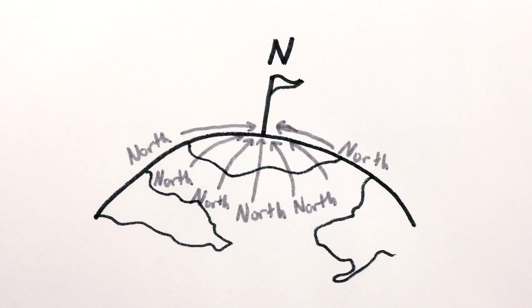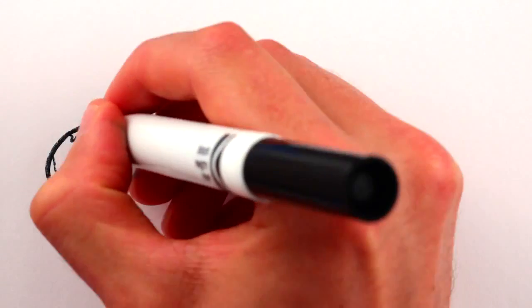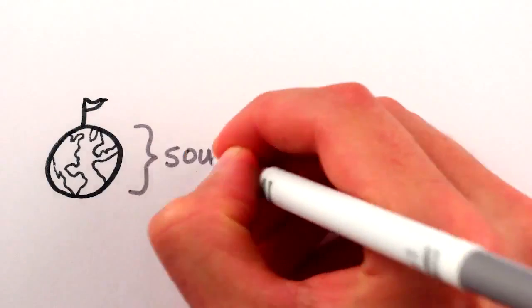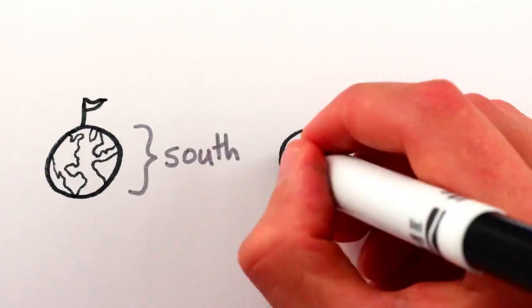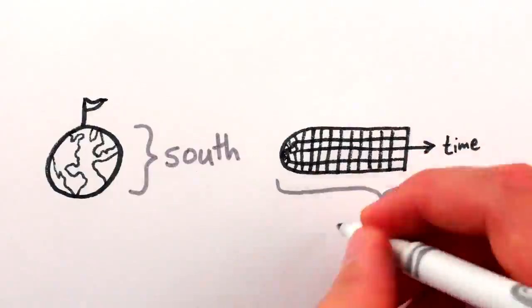I mean, what's north of the North Pole? The only thing you can say is that everywhere on Earth is south of the North Pole. Or similarly, every when in the universe is after the beginning.